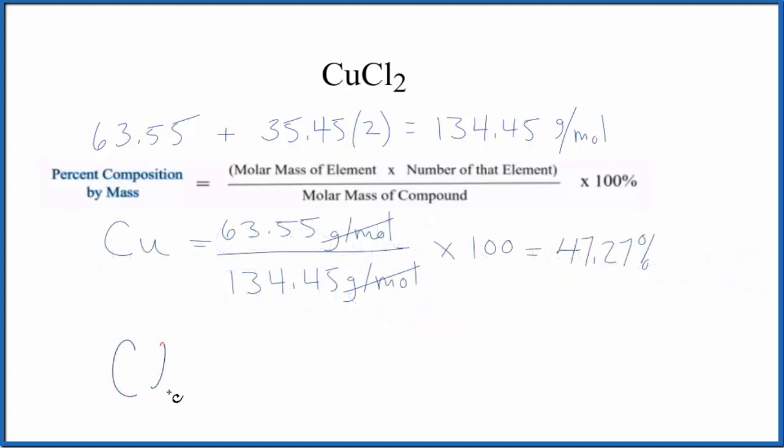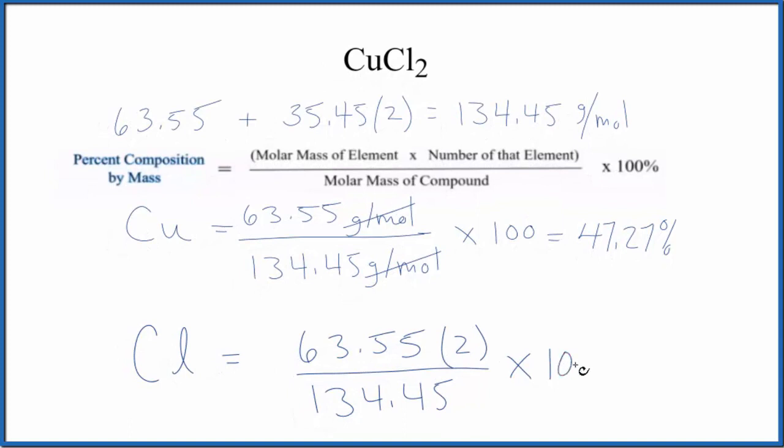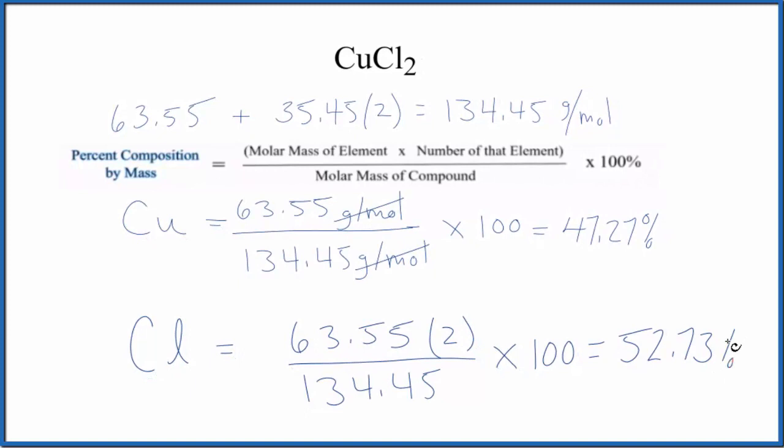So for chlorine, we have 63.55 grams per mole. I'm not going to write the units since they'll cancel out. And the number of the element, so we're multiplying the molar mass by the number of the element, we have two chlorine atoms. Let's put those up there. And again, we divide by the molar mass of the compound, multiply by 100, and we end up with 52.73 percent.